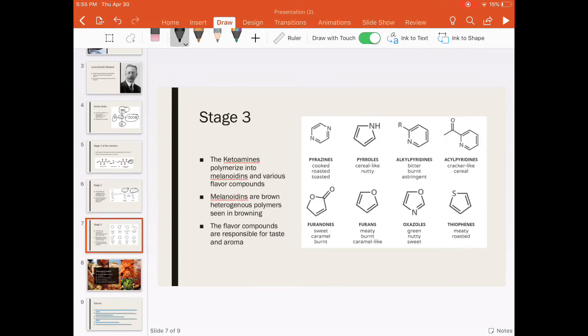The last step of the Maillard reaction is when the ketoamines polymerize into melanoidins and flavor compounds. The melanoidins are the result of the reaction seen physically through their brown look. The flavor compounds are various molecules that form, which are responsible for the taste and aroma of the reaction. The picture shows various flavor compounds and their properties.